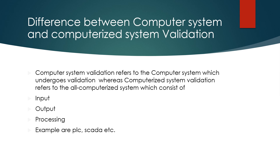Now, the difference between computer system validation and computerized system validation. Some people ask if they are the same — but they are different. Computer system validation is performing validation on a computer system. For example, a chromatography instrument is directly connected with a computer system, and we perform validation on that system — the computer having a keyboard, mouse, monitor, and software.